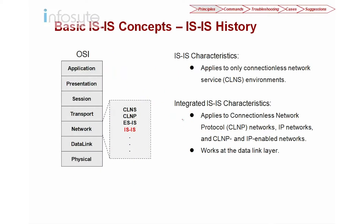Let's start with the basic concept of ISIS as well as ISIS history. ISIS stands for Intermediate System to Intermediate System. ISIS is an OSI standard and it resides in the network layer. We have ISIS and we have ES. ES basically means end system, whereas IS refers to Intermediate System. In our course, we are going to concentrate on ISIS, not ES.